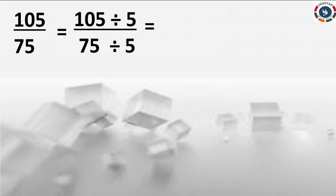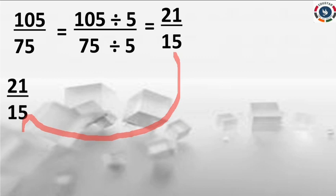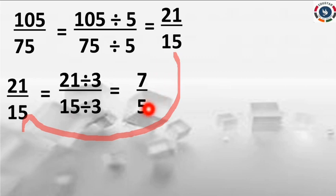Now 21 divided by 15. Which number can divide both? 21 and 15 are both odd composite numbers that appear in the 3 times table. So divide both by 3. 21 divided by 3 equals 7. 15 divided by 3 equals 5. So we get 7 by 5. Now 7 is a prime number and 5 is a prime number — both are prime numbers. So you can stop here.